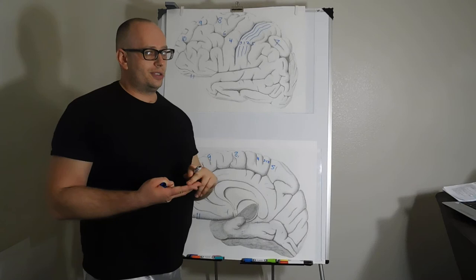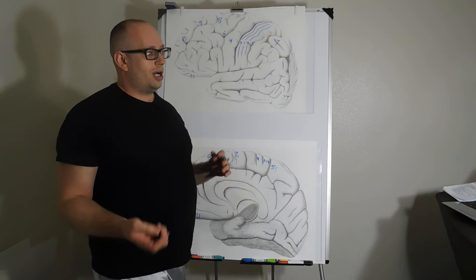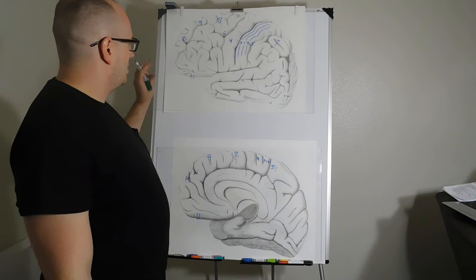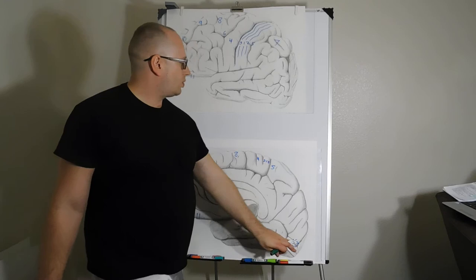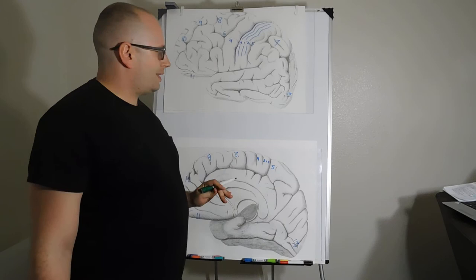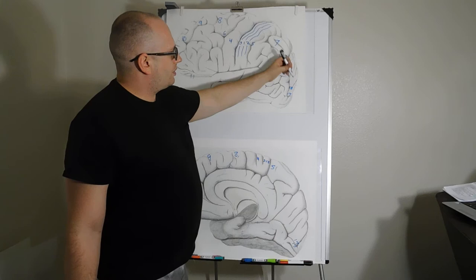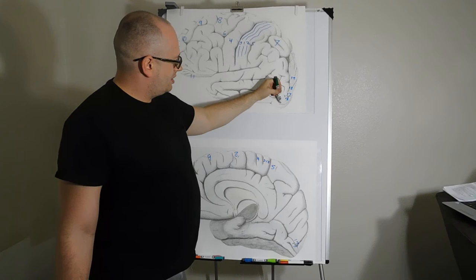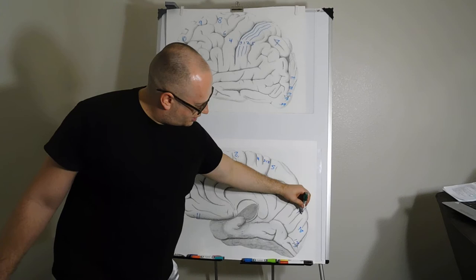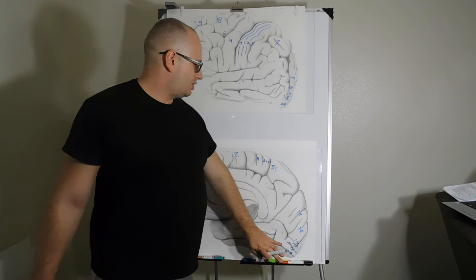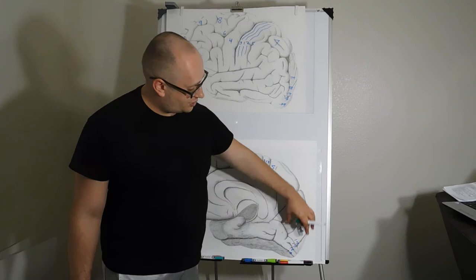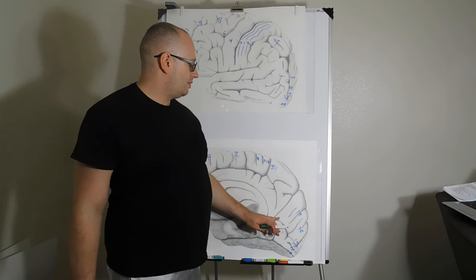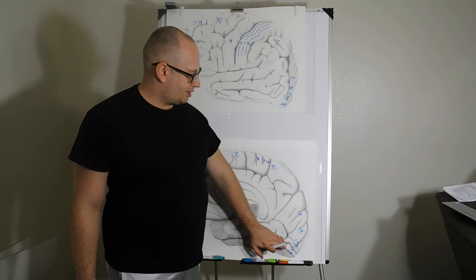We're going to skip areas 12 through 16 because some don't have a homologue in the human brain and others are abstract. Brodmann area 17 is your primary visual cortex — a thin strip here including your macular representation. That's the first place visual information goes. Higher-order processing areas 18 and 19 surround it. The lingual gyrus processes the superior visual field, and the larger cuneus processes the inferior visual field.